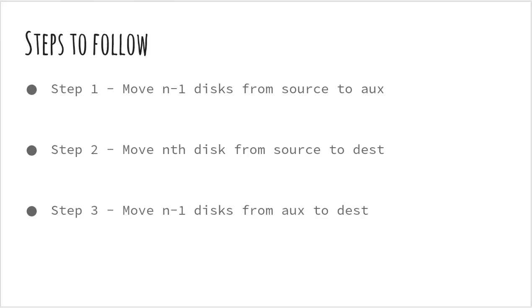So, essentially these are the steps you have to follow. Now, if we think back to the final result, if you have n disks which have to be moved to a destination peg, you can essentially move n-1 disks from the source to the auxiliary peg. You can move the nth disk, the nth disk in this case is the largest disk at the bottom. So, you can move the nth disk from the source to the destination peg. And then you can again move n-1 disks from the auxiliary peg to the destination peg.